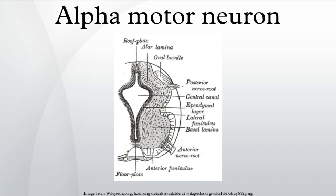One type of interneuron is the Renshaw cell. Alpha motor neurons send fibers that mainly synapse on extrafusal muscle fibers. Other fibers from alpha motor neurons synapse on Renshaw cells — inhibitory interneurons that synapse on the alpha motor neuron and limit its activity in order to prevent muscle damage.